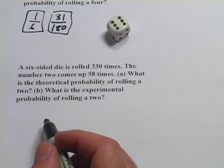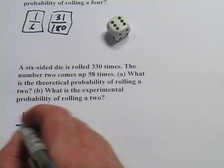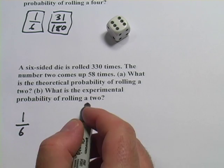Well, the theoretical probability of rolling a two is still one in six. The die hasn't changed. So that's the first part.